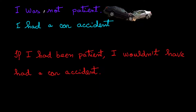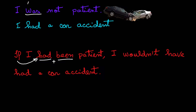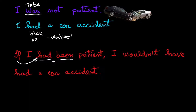Next example: I was not patient — we have the verb 'to be' here — and as a consequence I had a car accident. Same structure: if I had been patient. The verb 'to be' in the present is 'is' or 'are,' and in the past we have 'was' for singular or 'were' for plural — that's the simple past.